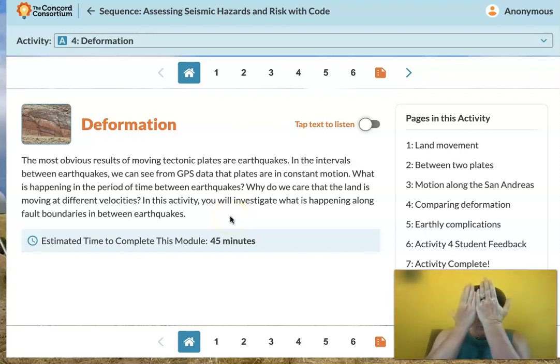Remember a fault is two plates where they interact and right now we're looking at transform boundaries between plates which are a fault, or you can have convergent boundaries, you have divergent boundaries, but a fault is where two plates meet. Two separate pieces of rock that make up the earth's surface come together and interact at that fault.